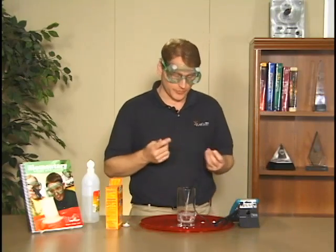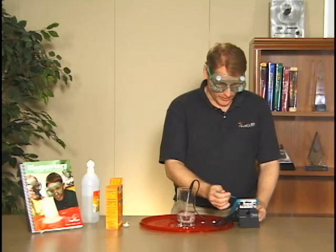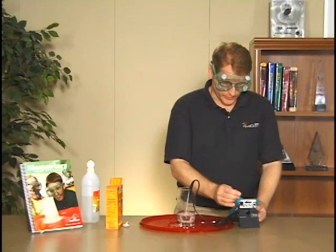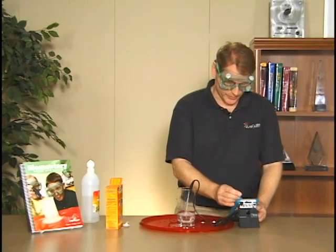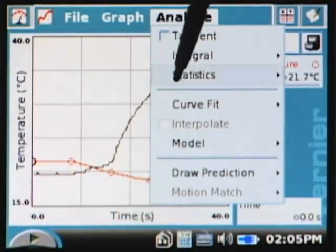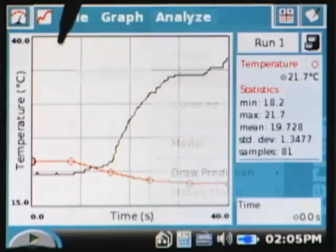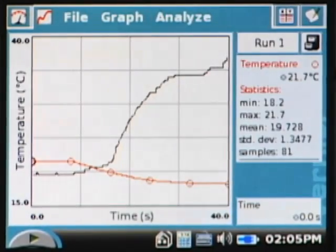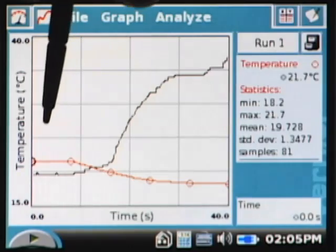I can do some statistics - I'm going to go to analyze, and we go to statistics. Over on the right side of the screen, we see the minimum temperature was 18.2, the maximum was 21.7, and we can see that there. We can even move along our graph and actually find the values at different points in time if we want to.